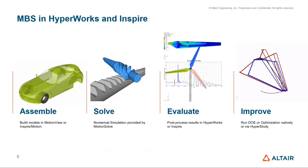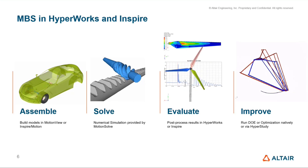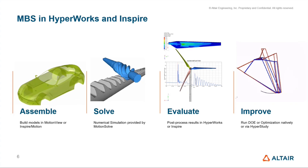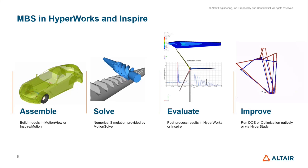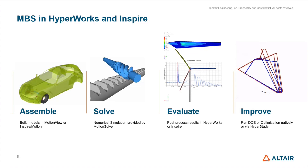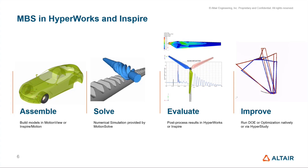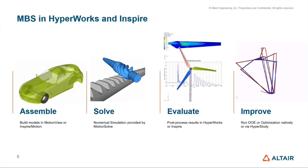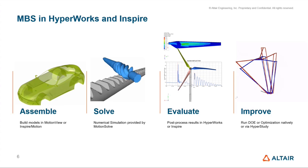For those uninitiated into our Alt-S Motion capabilities, a quick overview. Our solution is available in both HyperWorks and Inspire platforms. Using these, one can assemble a multi-body model either in Motion View, which is in HyperWorks, or in Inspire, solve using Motion Solve, post-process the results, and optimize — either using native optimization capability in Motion Solve or HyperStudy.